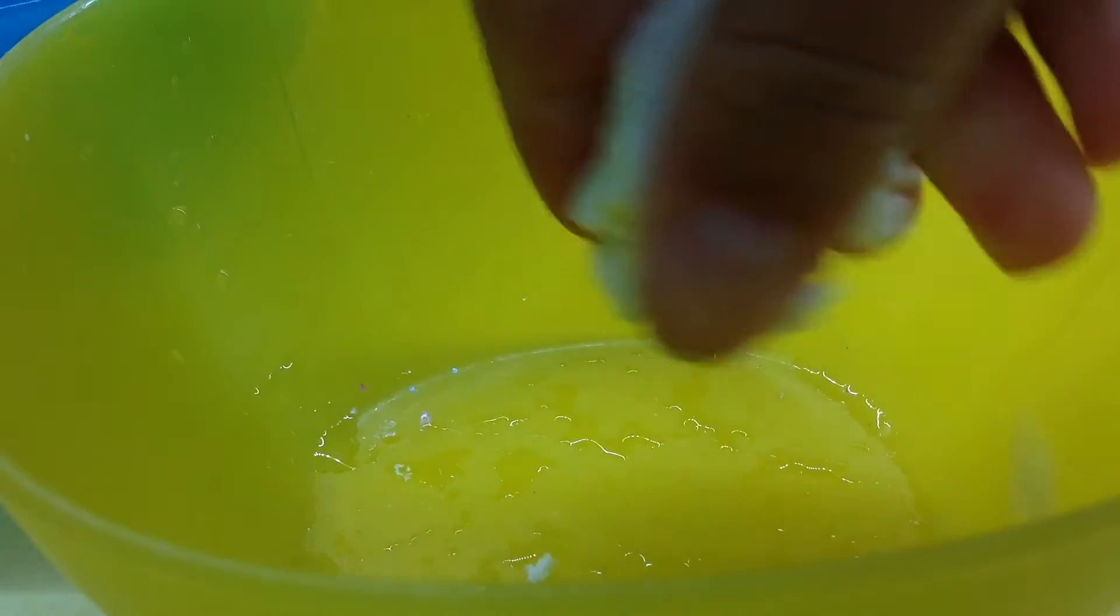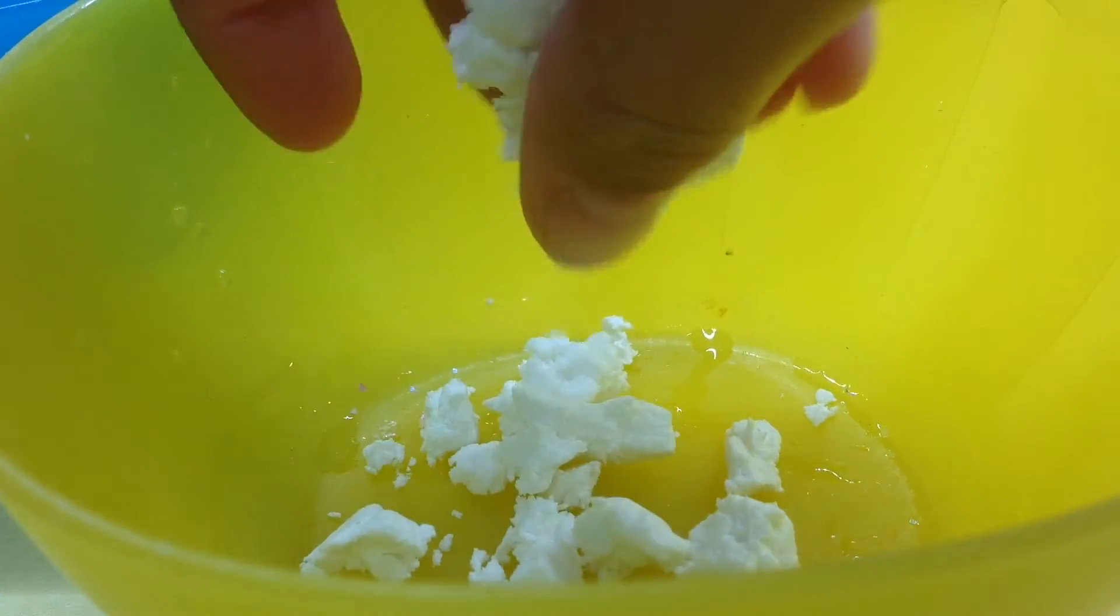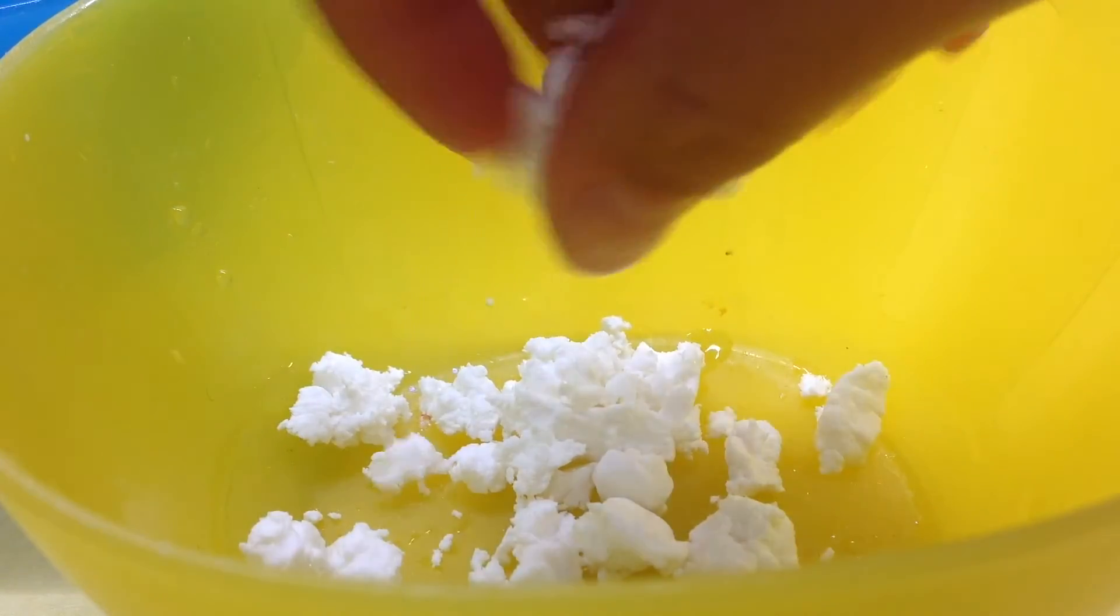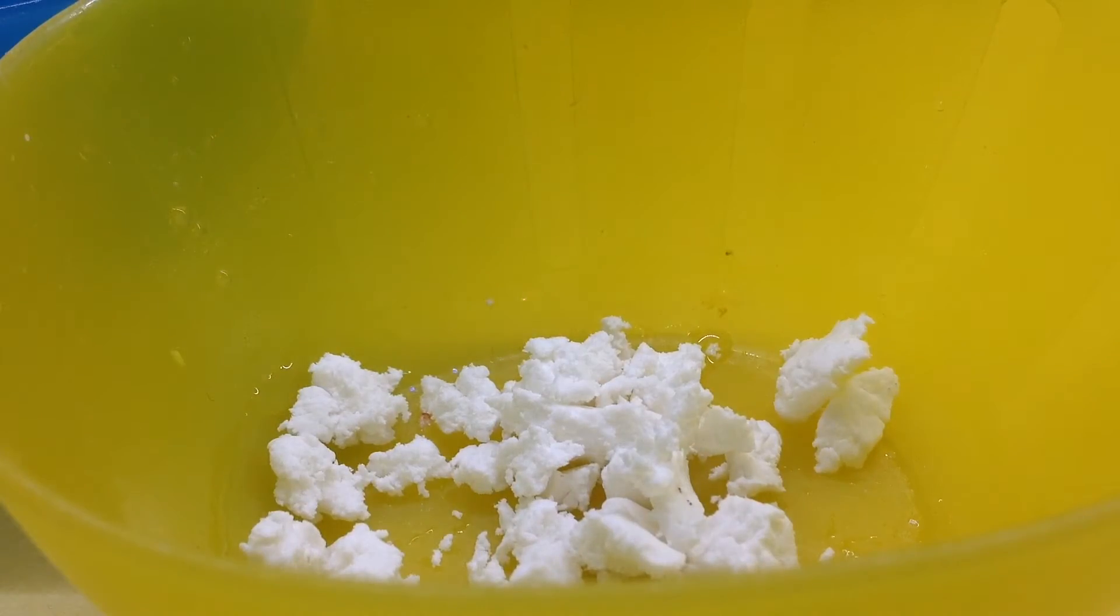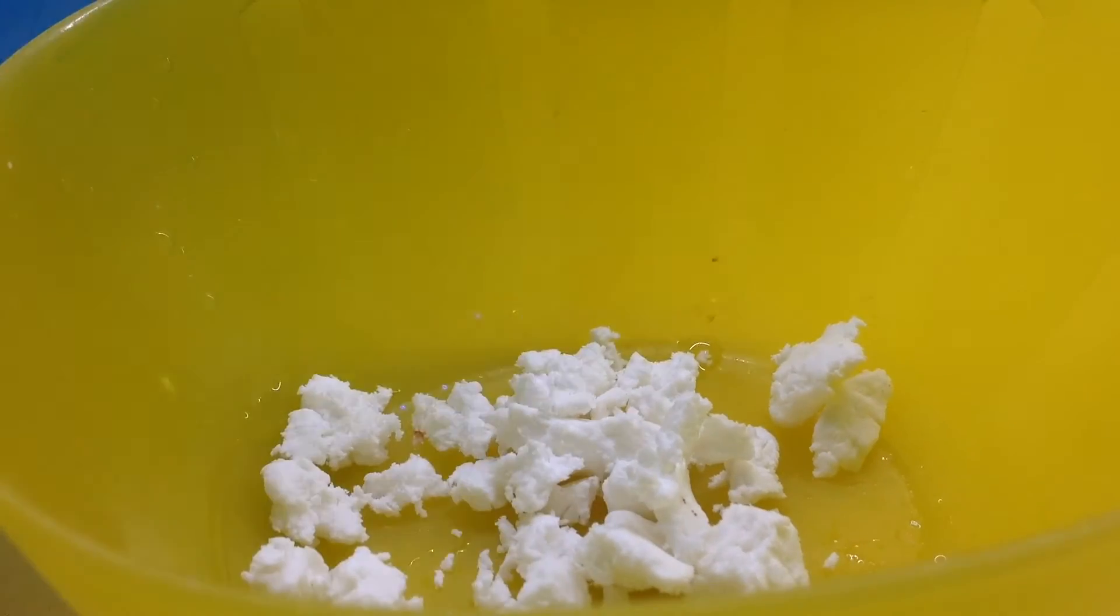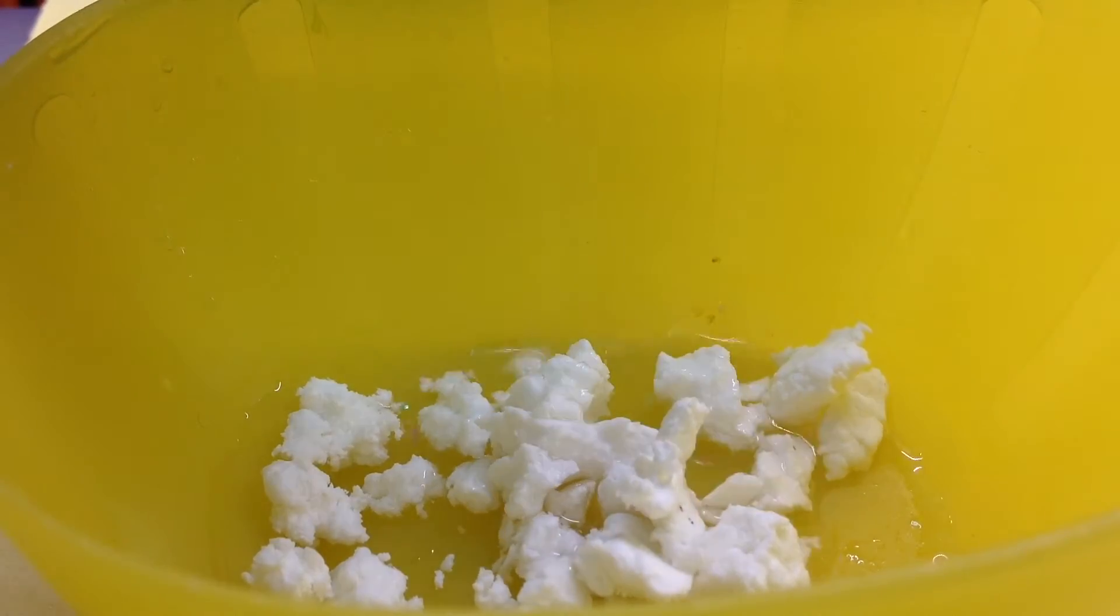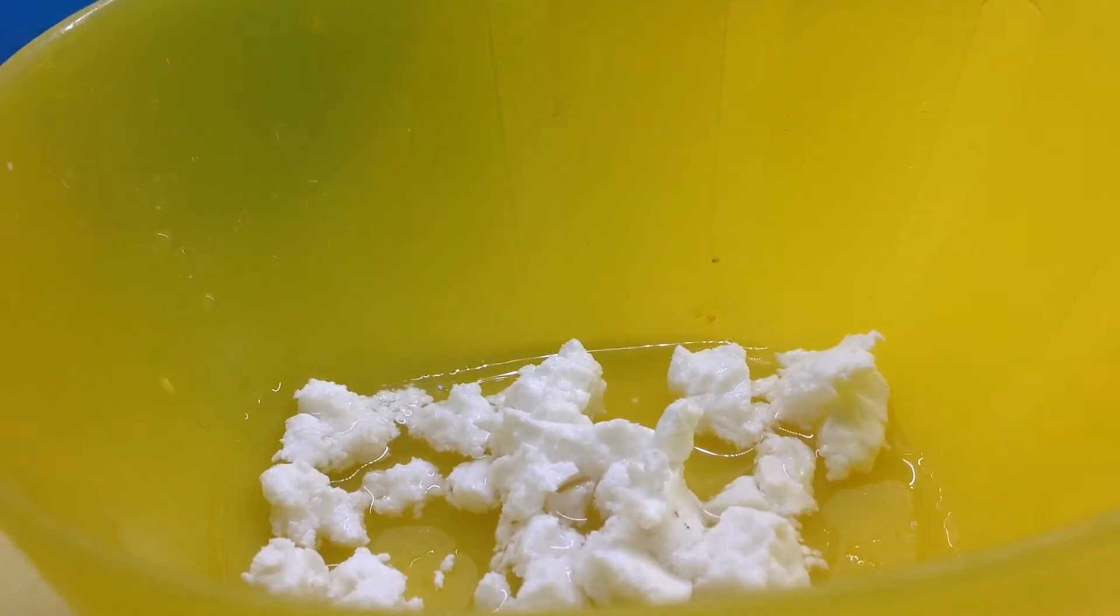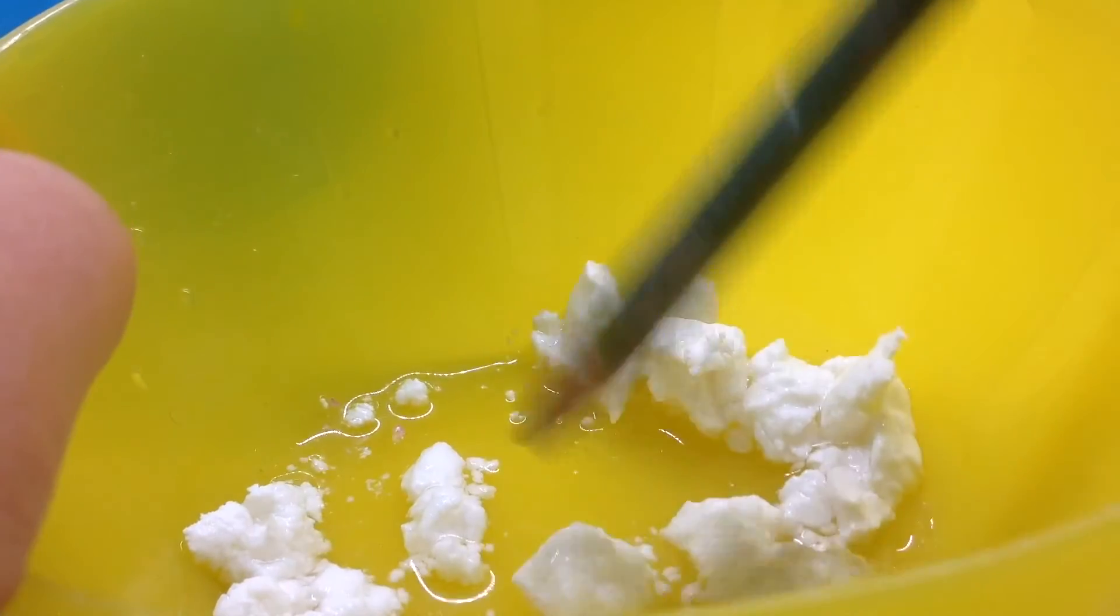You're going to want to start with your bowl without any water. You're going to want to add some clay and pour some water in, and then start mixing it with your pencil. I started using a pencil but I found it easier with a spoon, so I swapped to a spoon a little afterwards.